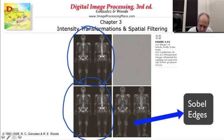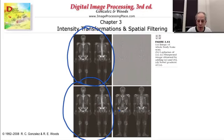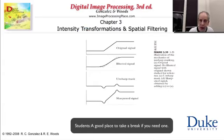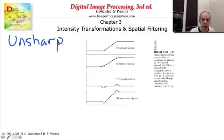Very interesting effects can be achieved in images by combining derivatives with the image in different directions and through additions of derivatives. One of those effects is called unsharp masking — a very famous and very simple concept.